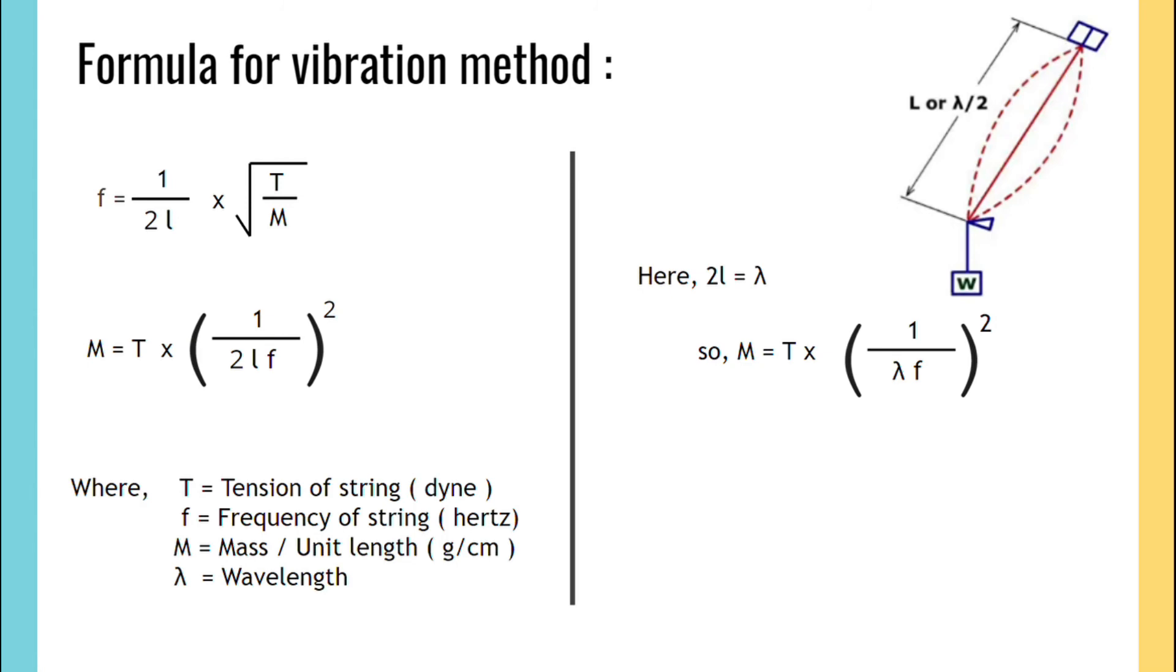If it is expressed in denier, the formula is multiplied by 9 × 10^5 denier. This formula has to be kept in mind while solving the problem.